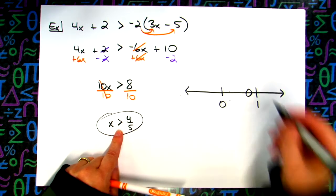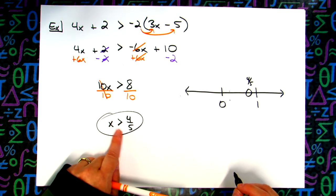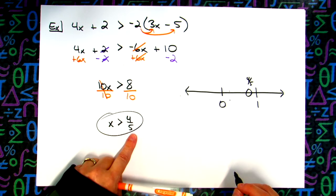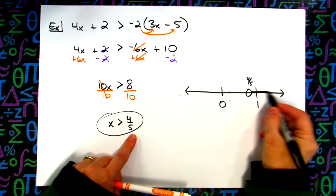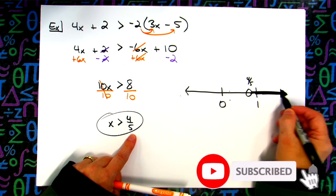Don't put another hash mark on there. Estimate it. That's 4 fifths. Which way am I shading? X is greater than 4 fifths. I'm shading to the right.